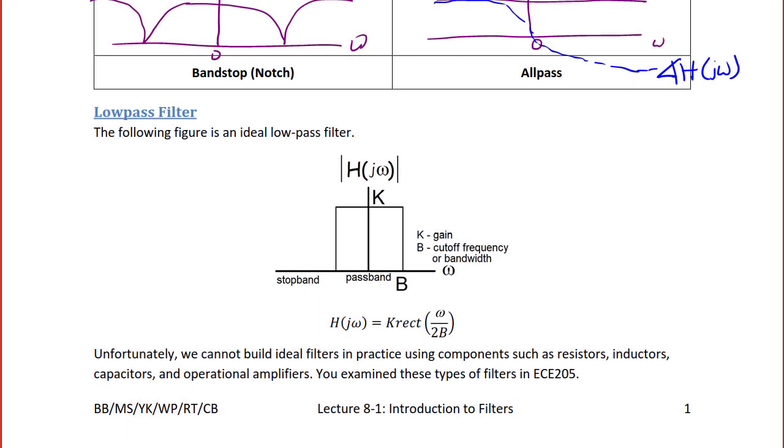Low-pass filter. The following figure is an ideal low-pass filter. Unfortunately, we cannot build ideal filters in practice using components such as resistors, inductors, capacitors, and op amps. You actually examine these types of filters in ECE 205, the prerequisite for this course. But notice for an ideal low-pass filter, it looks like a brick wall. It has a magnitude H of J omega where the gain is K. The cutoff frequency or bandwidth is B, and it has a pass band and a stop band.